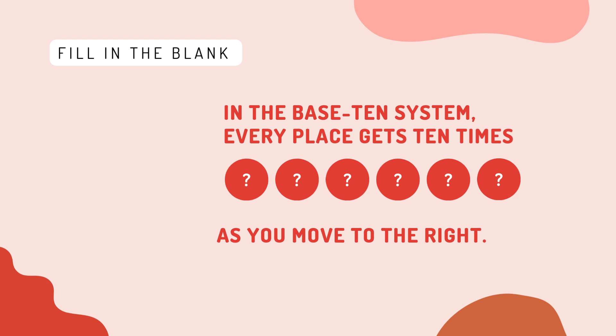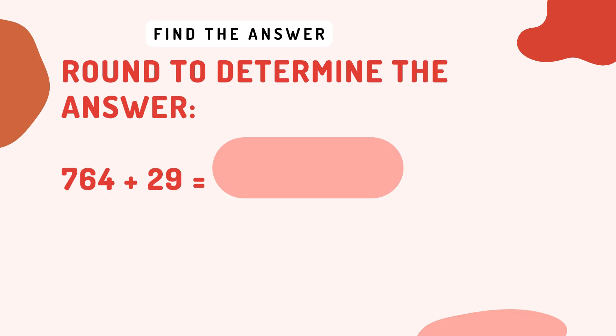Fill in the blanks: in the base 10 system, every place gets 10 times as you move to the right. Find the answer by rounding to determine the answer.